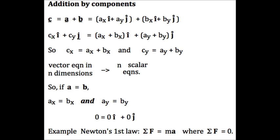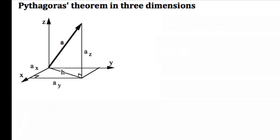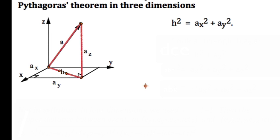While we're looking at vector components, let's do Pythagoras' theorem in three dimensions. What is the magnitude of a? To start, look at the hypotenuse h in the xy plane. Pythagoras gives h squared equals ax squared plus ay squared. Now, look at the triangle with sides h, az and a.